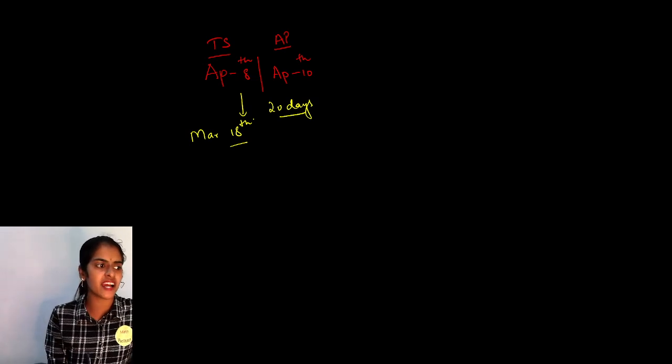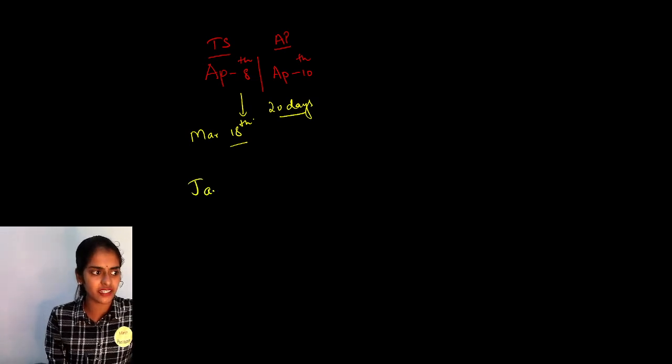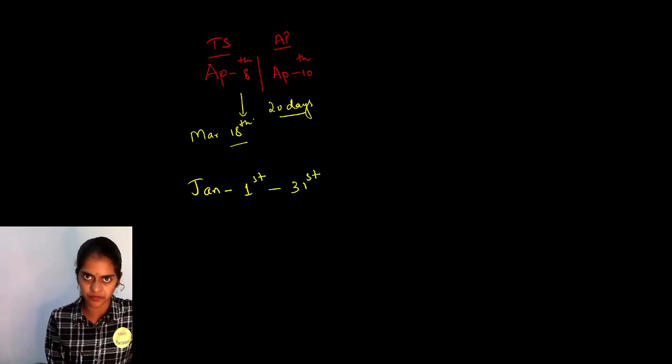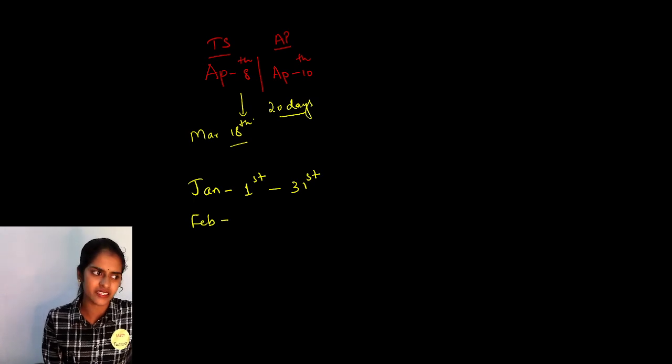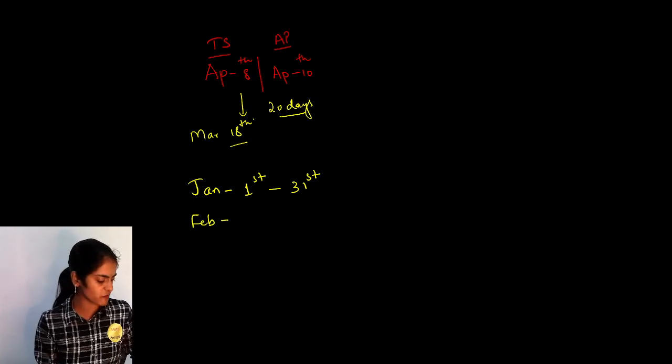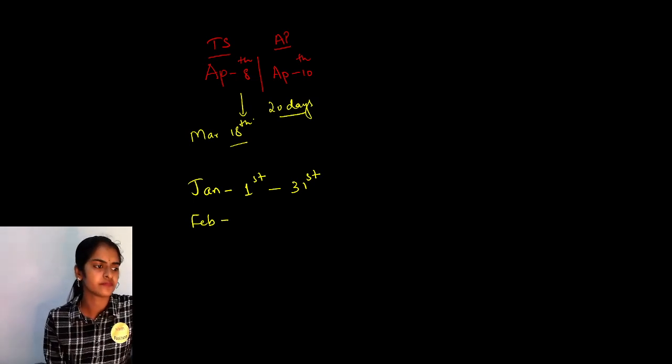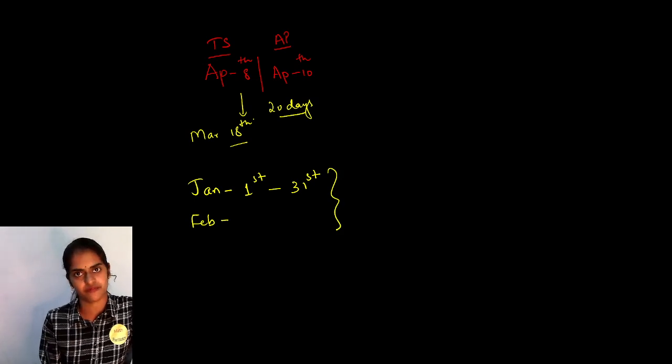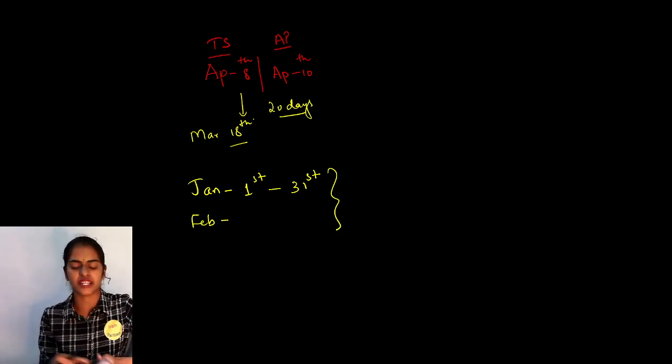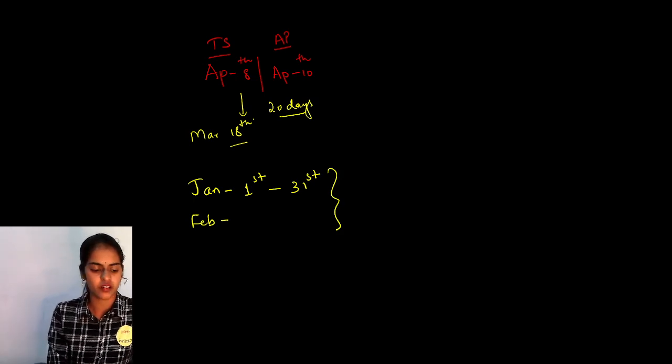So accordingly, we have January. Today is January 1st. Okay, then January 1st to 31st is what we have. In between you have Sankranti holidays. Then you have Feb. Feb. This year, I think we have 29 days. Yes. So only these two months we have for our preparation. Right? Only these two months. So now how are we going to plan? Okay.